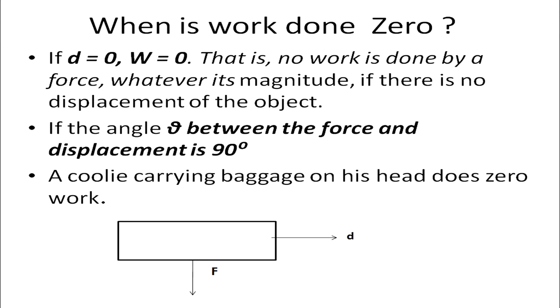Let's see the case when the work done is zero. When the displacement is equal to zero, then the work done is zero — no work is done by a force whatever its magnitude if there is no displacement. Secondly, if the angle θ between the force and the displacement is 90 degrees, then also the work done is zero. The perfect example for this is a coolie carrying baggage on his head — he does zero work.